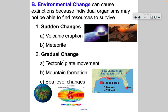Gradual changes take a little bit longer. Examples include tectonic plate movement — Earth's continents were once one supercontinent called Pangaea, which is the most famous, though there have been a few different supercontinents. Mountain formation caused by plate tectonics, sea level changes, habitats disappearing for land animals, or habitats expanding for aquatic organisms are all gradual changes.